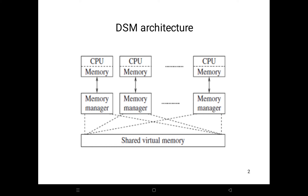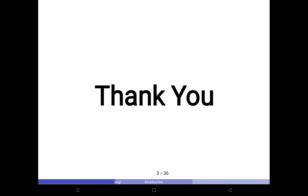What are the advantages of distributed shared memory? A single address space simplifies passing by reference and passing complex data structures. There is no memory access bottleneck, and it provides a large virtual memory space. Additionally, a DSM system is cheaper to build than a tightly coupled multiprocessor system.